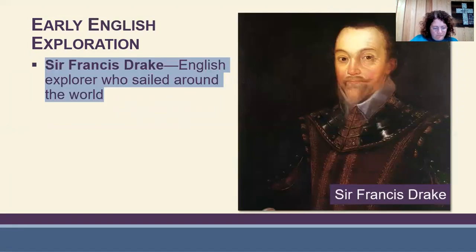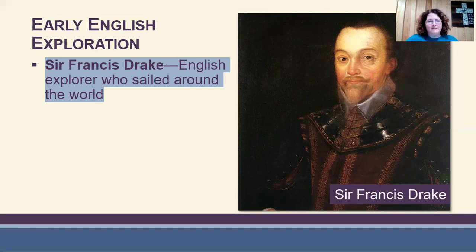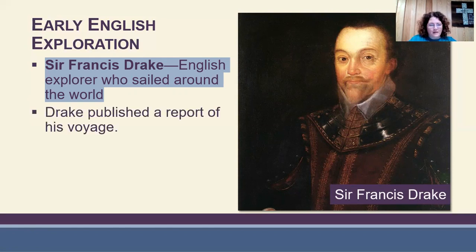Not to be outdone by the Spanish and Portuguese, Queen Elizabeth of England sent Sir Francis Drake to sail around the world in 1577. He was part of a group called the Sea Dogs — English sea captains who acted almost like pirates on behalf of Queen Elizabeth to strike at the economic heart of the Spanish. After sailing around the world, which took him three years, he published a report of his voyage. He told of seeing new lands and peoples and enjoying God's gifts in nature. He also described times of hardship, such as winds, storms, heat, and lack of fresh water.